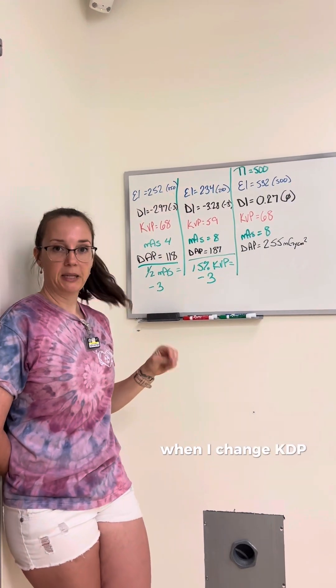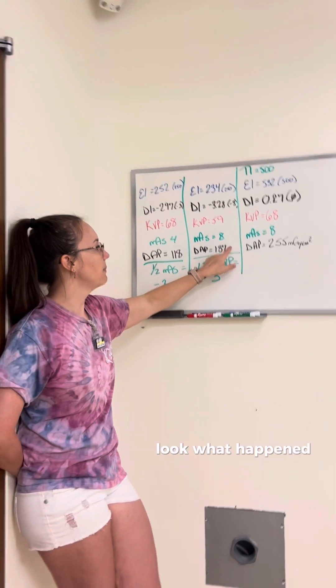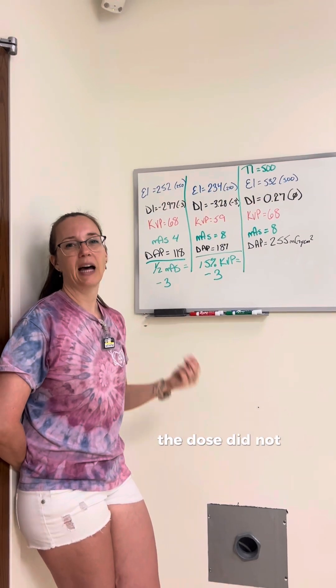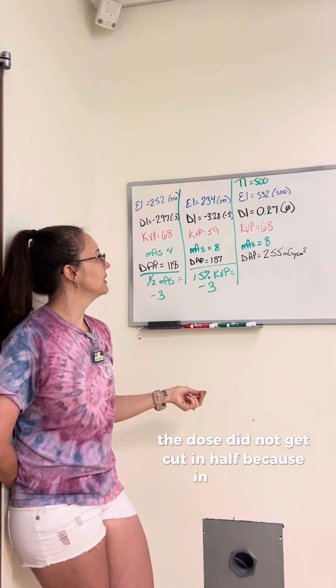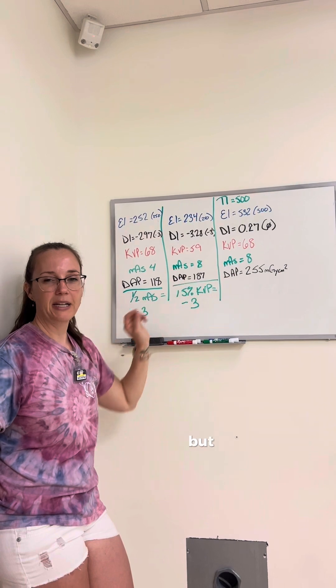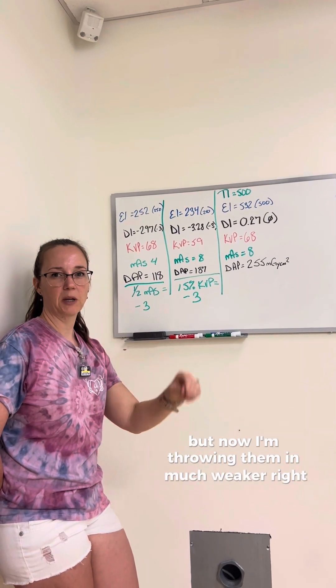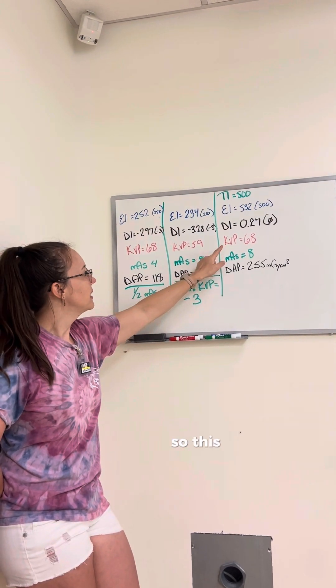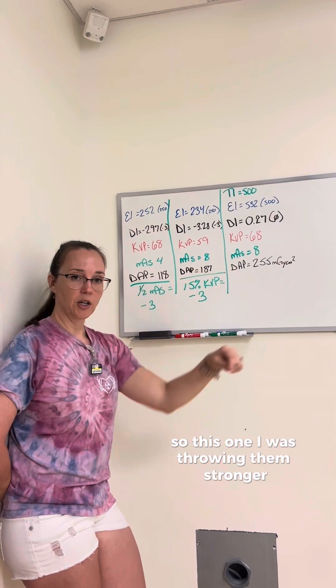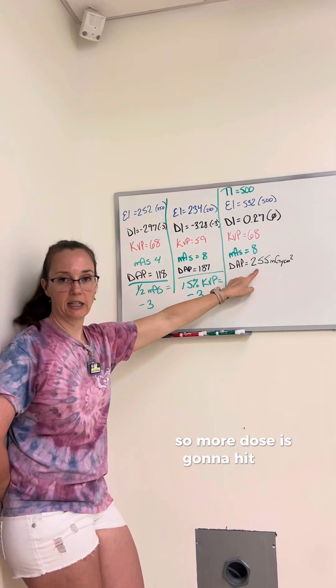When I change KVP, though, look what happened to the dose. The dose did not get cut in half because in this case, I'm still throwing 8 balls at them, but now I'm throwing them much weaker. So this one, I was throwing them stronger, so more dose is going to hit the patient.